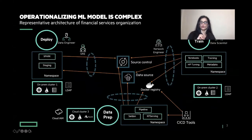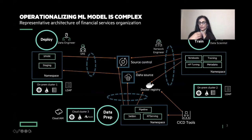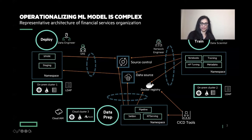If you look at this picture, this is a representative architecture of a large financial institution that has a pretty large footprint of machine learning activities that happen across various systems and across different groups. You have data pre-processing done by your data engineers, and then you have the actual machine learning process done by your data scientists, and then a deployment of a model. There are several different processes — a perimeter, edge, attack surface, multiple different Kubernetes clusters, probably in different trust domains.